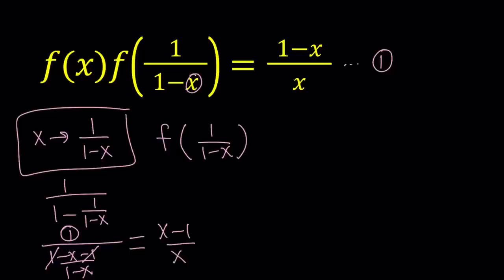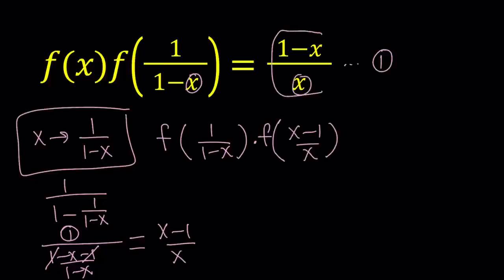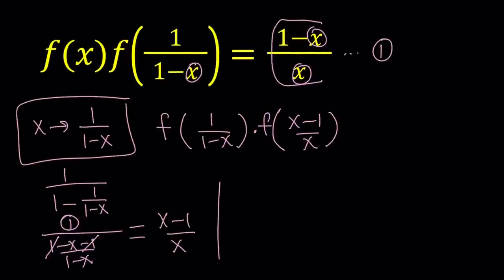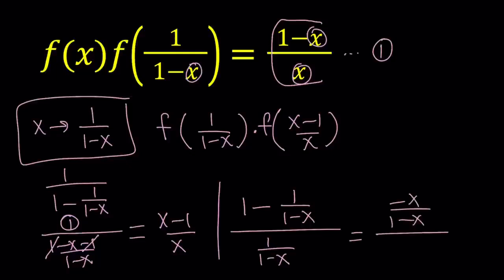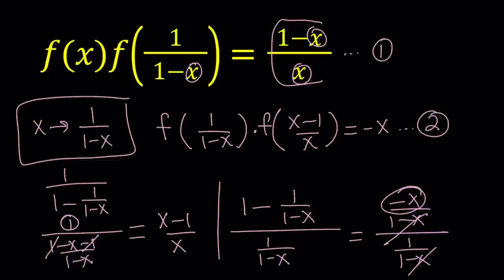To keep a long story short, this gives us x minus 1 over x. So this second f is going to be f of x minus 1 over x. We also have to replace x in the right-hand side: replacing x with 1 over 1 minus x in 1 minus x over x. Making a common denominator gives 1 minus x minus 1, which is negative x over 1 minus x, with 1 over 1 minus x on the bottom. When 1 minus x cancels out, we end up with negative x. Let's call this equation number 2.